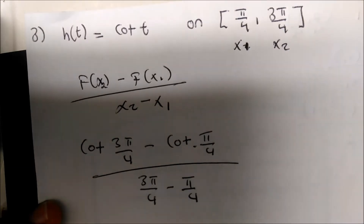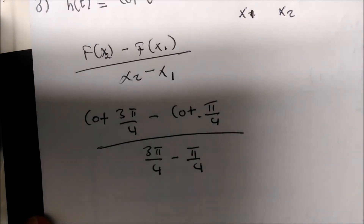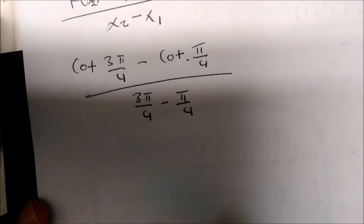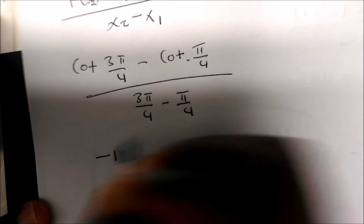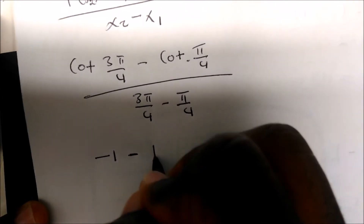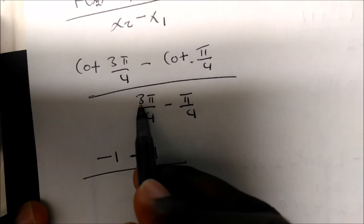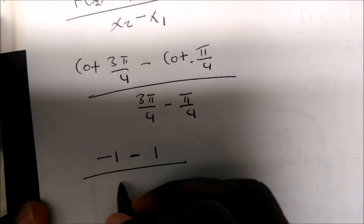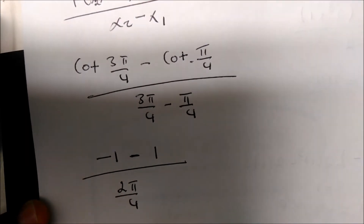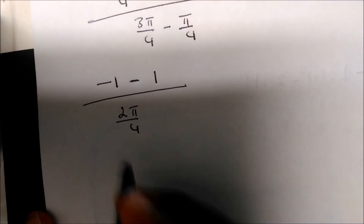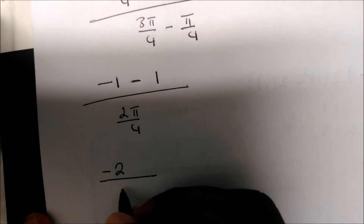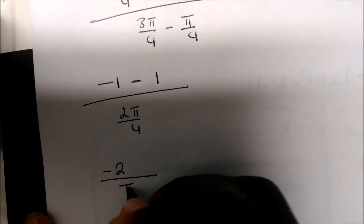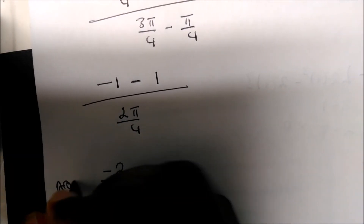Plugging in: cotangent of 3π/4 minus cotangent of π/4, divided by 3π/4 minus π/4. Knowing your unit circle, cotangent of 3π/4 is negative 1, minus cotangent of π/4 which is 1, divided by 2π/4, which simplifies to π/2. So we have negative 2 over π/2.